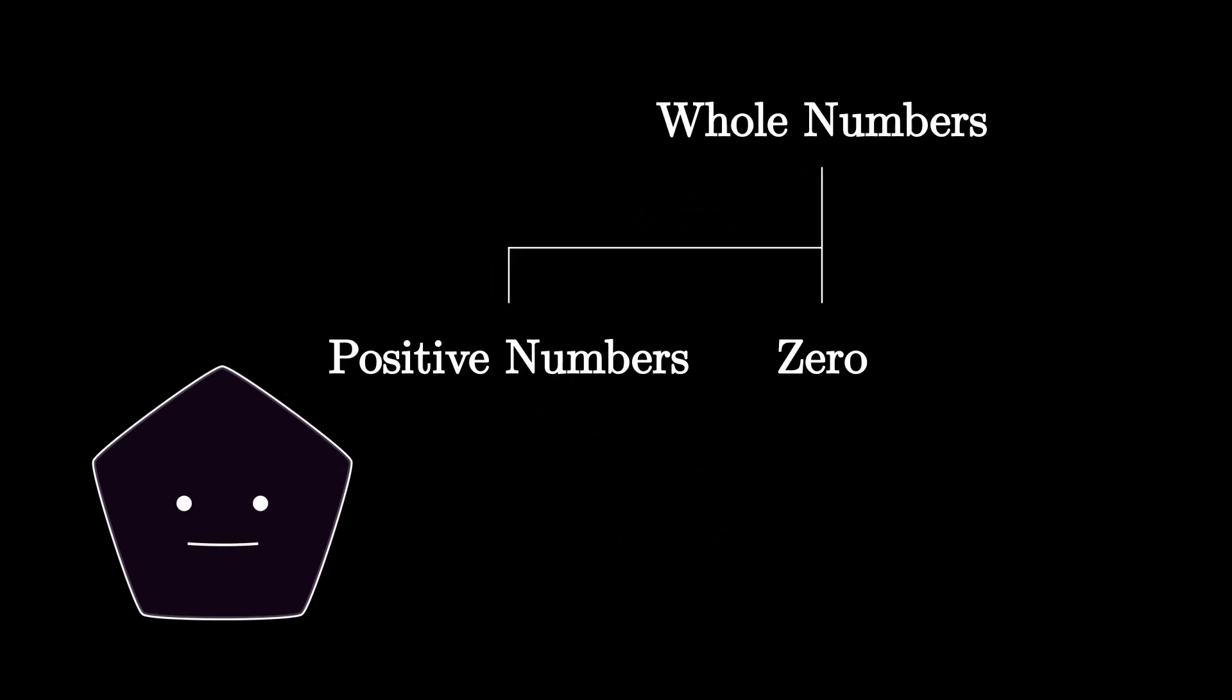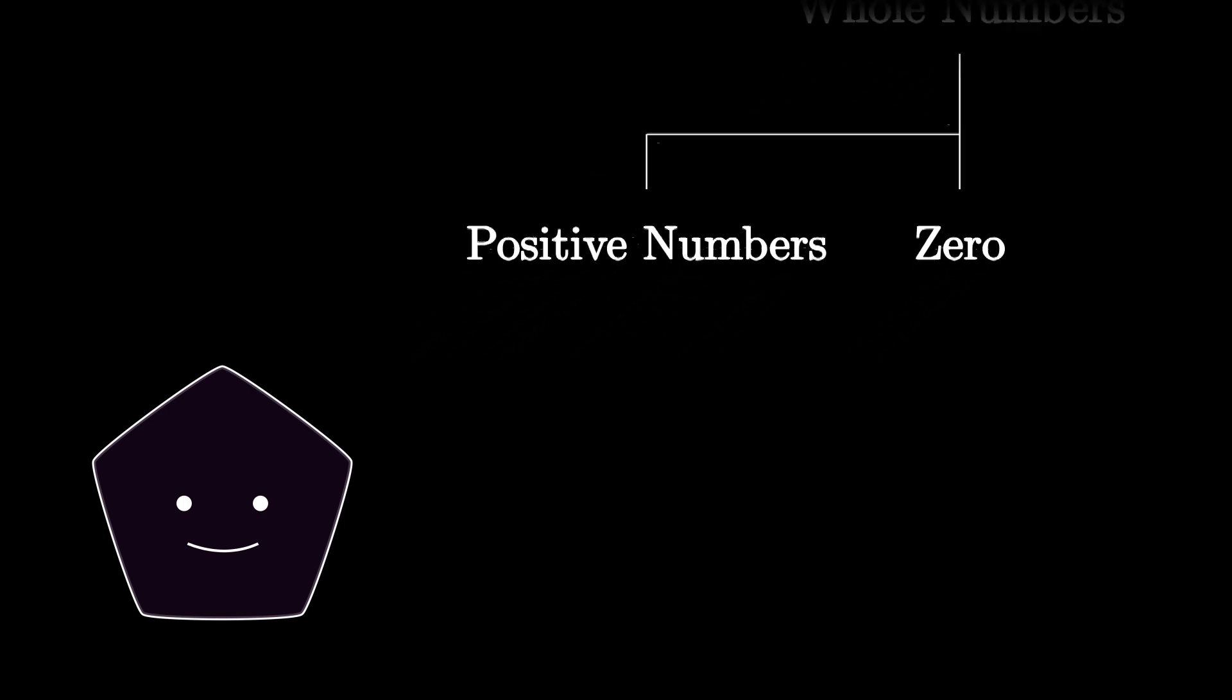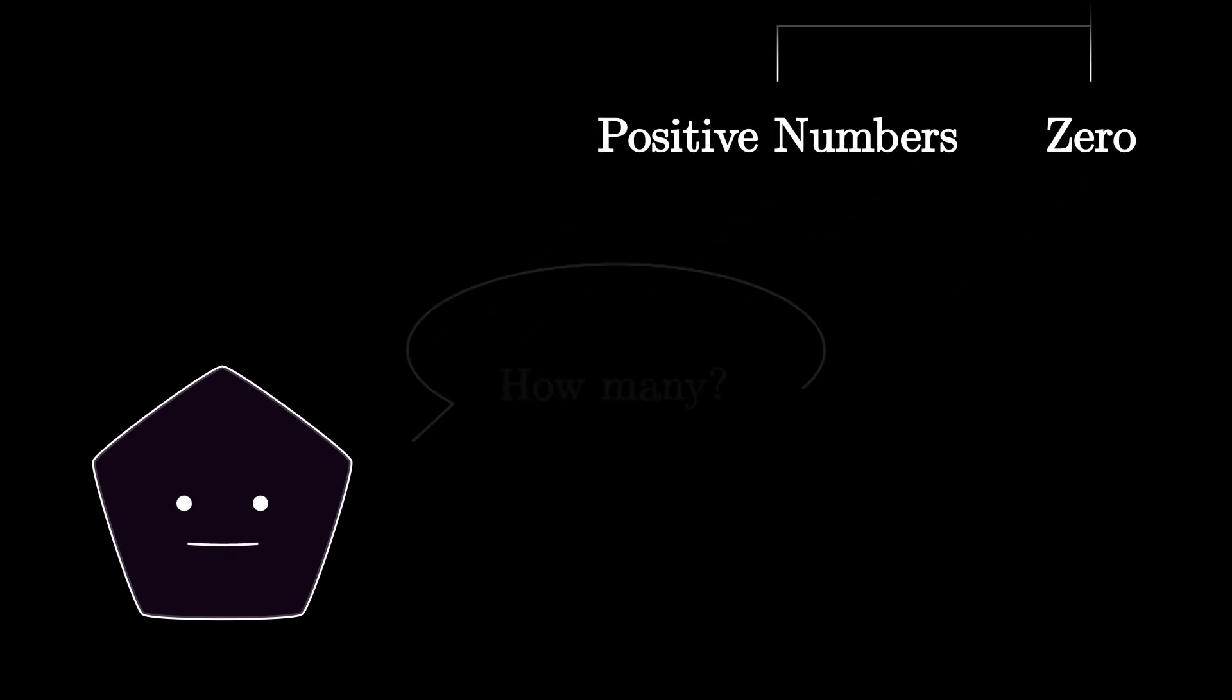When we first started learning about numbers, the whole numbers 0, 1, 2, and so on made sense. They helped in answering questions like how many. Once we accepted these numbers, we defined certain operations like addition and subtraction, and these all made perfect sense.